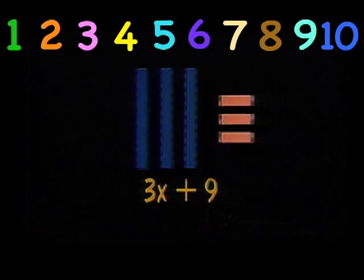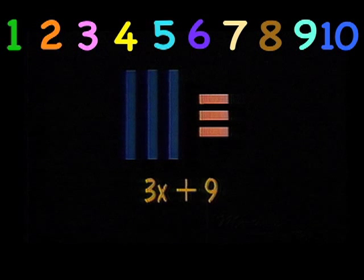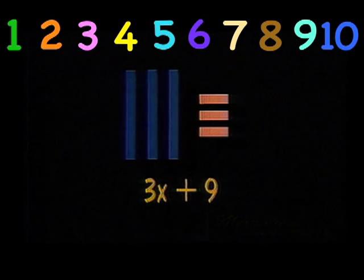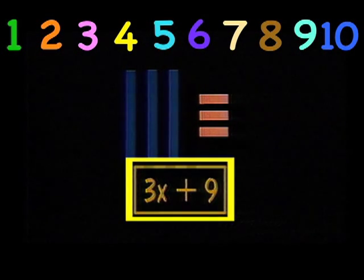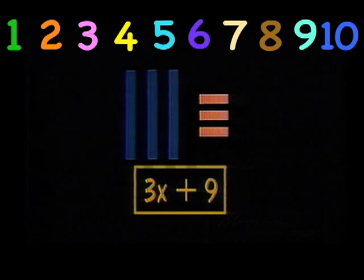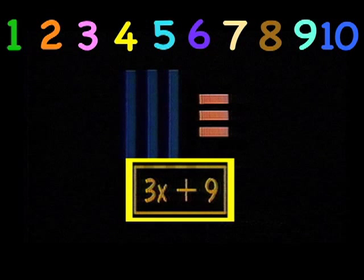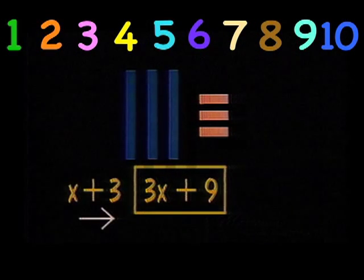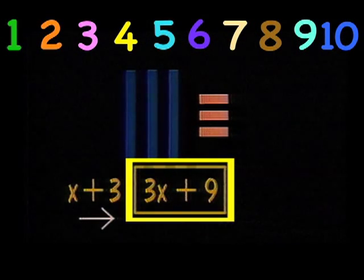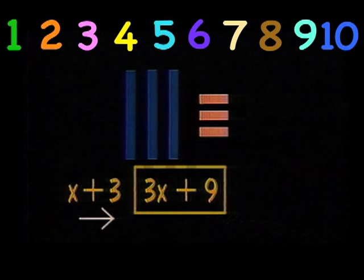Let's take 3x plus 9 and arrange it into a rectangle. The box around 3x plus 9 tells us to arrange it into a rectangle. The x plus 3 to the left of the rectangle, or box, tells us the over dimension of the rectangle we build.